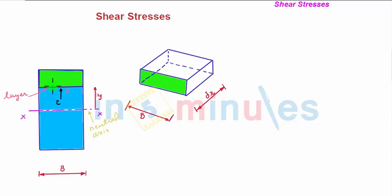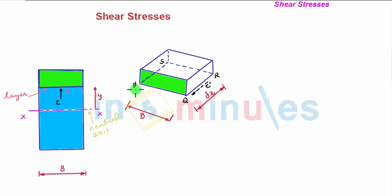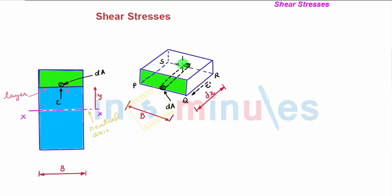We show the elemental part of the beam in this diagram, where your length is delta x and your width is b as shown in the figure. The shear stress at point p is equal to the complementary shear stress tau dash, which is acting at the bottom surface of this elemental part of the beam — the surface denoted by PQRS as shown in the figure. We consider a small elemental area dA at the same vertical distance y from the neutral axis of the whole cross-section.